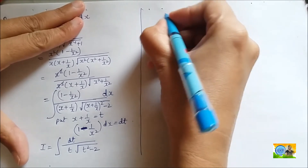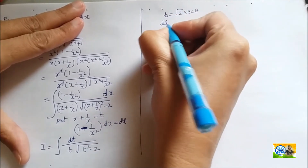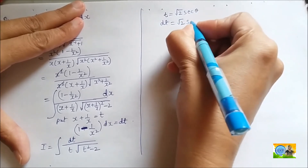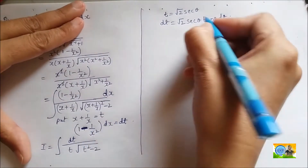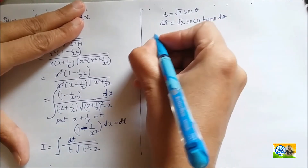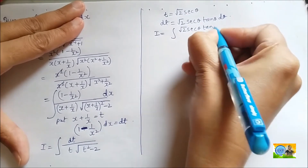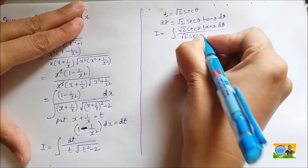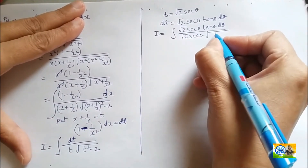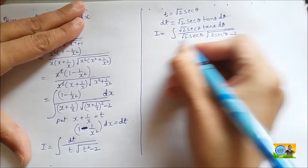Now let us substitute again. Let t = √2 sec θ. In that case, dt = √2 sec θ tan θ dθ. Substituting into the integral: in place of dt we write √2 sec θ tan θ dθ, and in the denominator t = √2 sec θ, and under the root, t² - 2 = 2 sec²θ - 2.